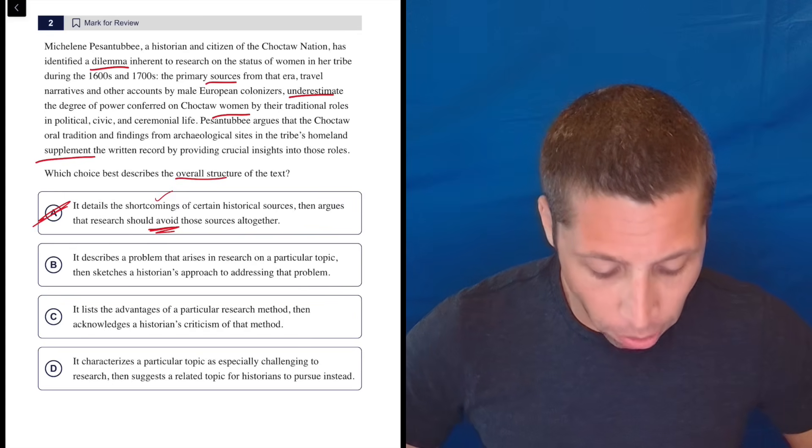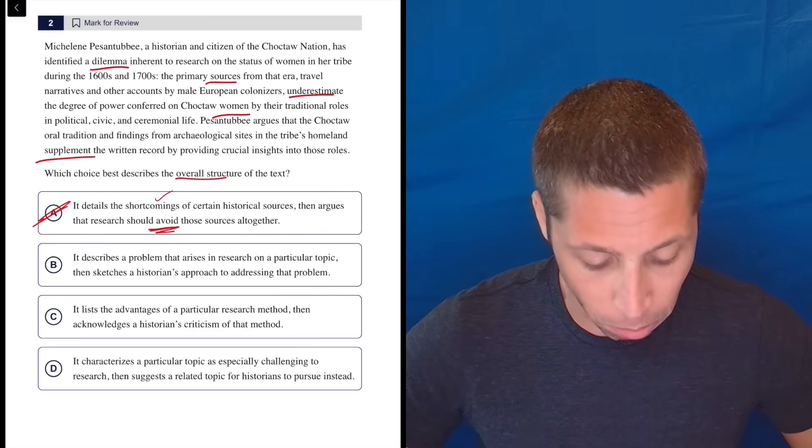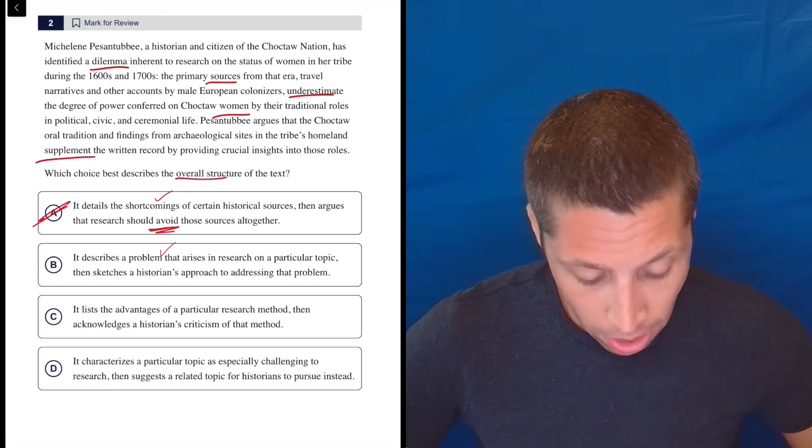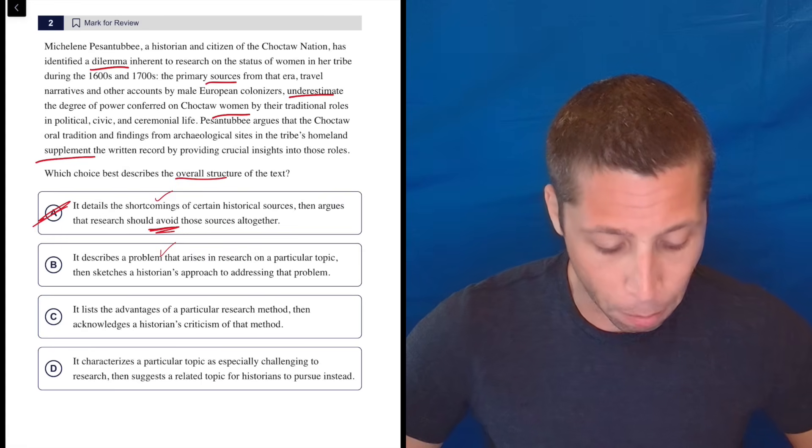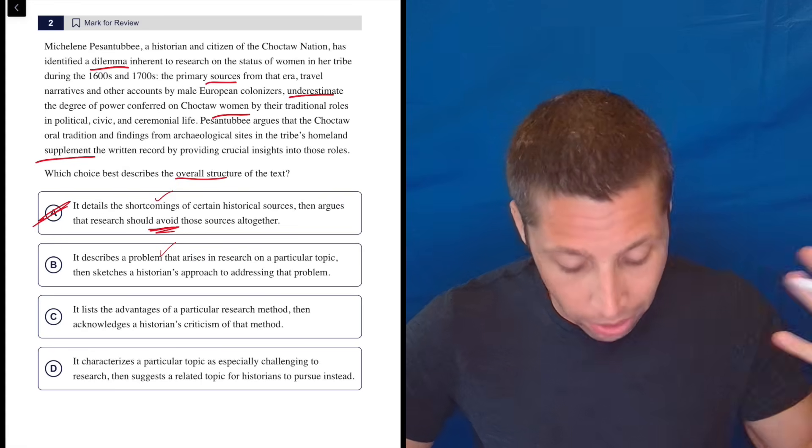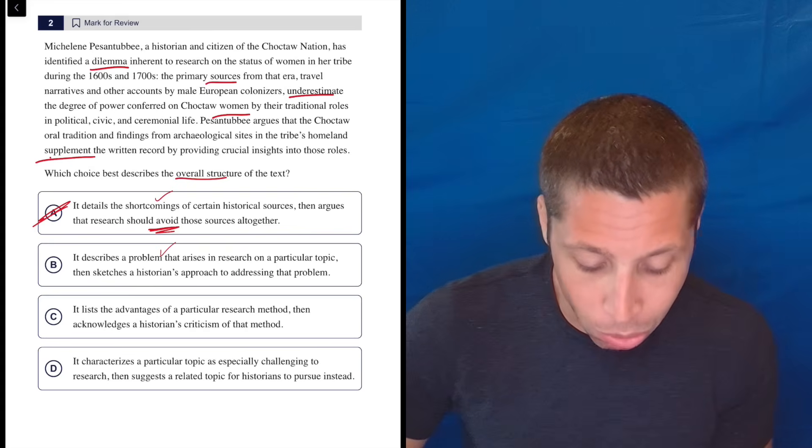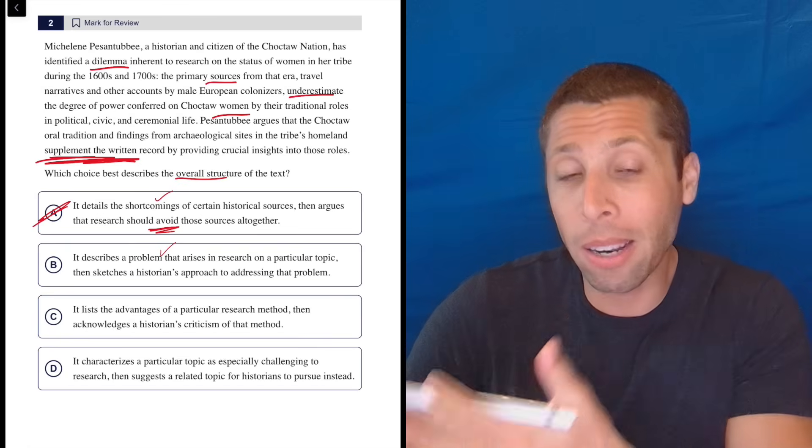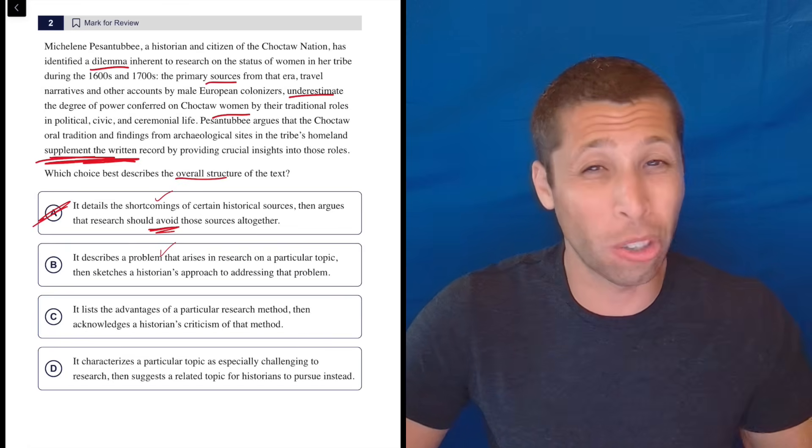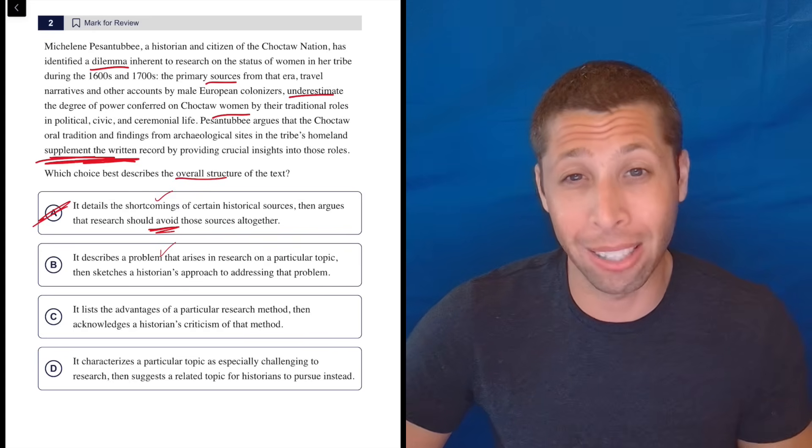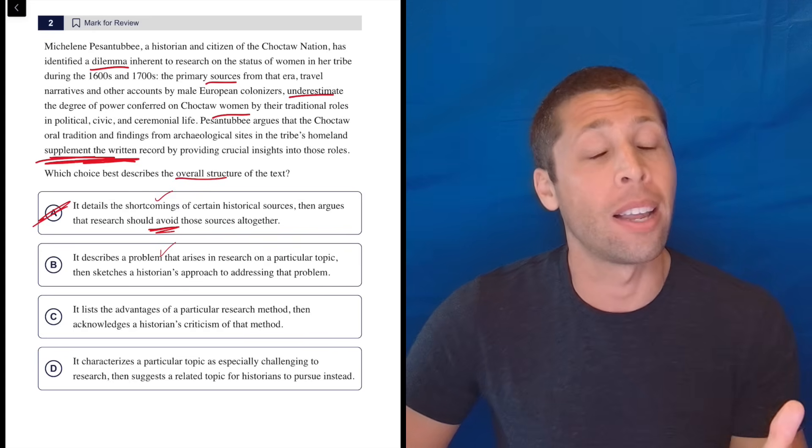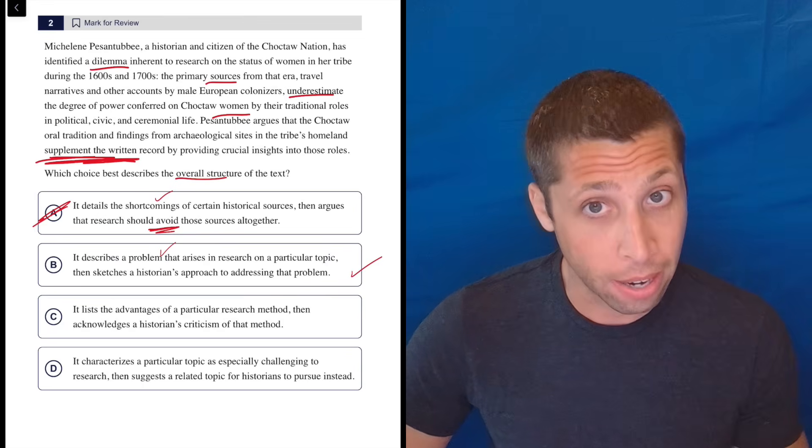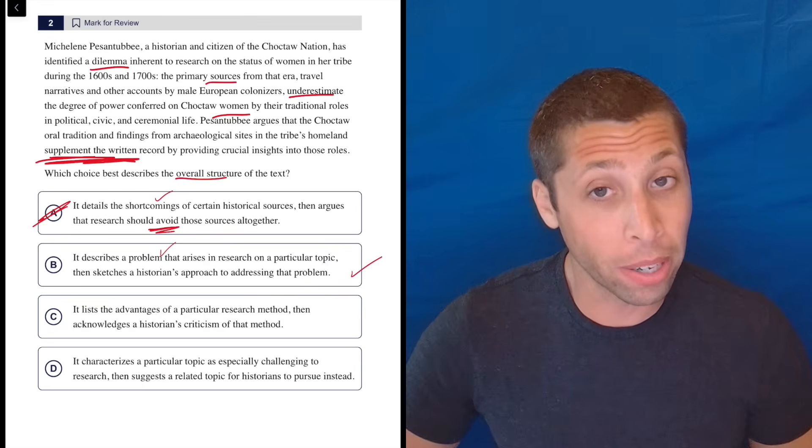B, it describes a problem that arises in research on a particular topic. I agree that that's basically saying the same thing that choice A is saying at the first part. Then sketches a historian's approach to addressing that problem. Now turn that into a question. What is this historian's approach? It's to supplement the written record with these other types of sources. The fact that I can turn that half of the choice into a question and then answer that question just by pointing to something in the passage, that's a really good sign that we have proven that answer choice correct. Obviously, I'm not going to just go ahead and pick it, but it's the front runner for sure.